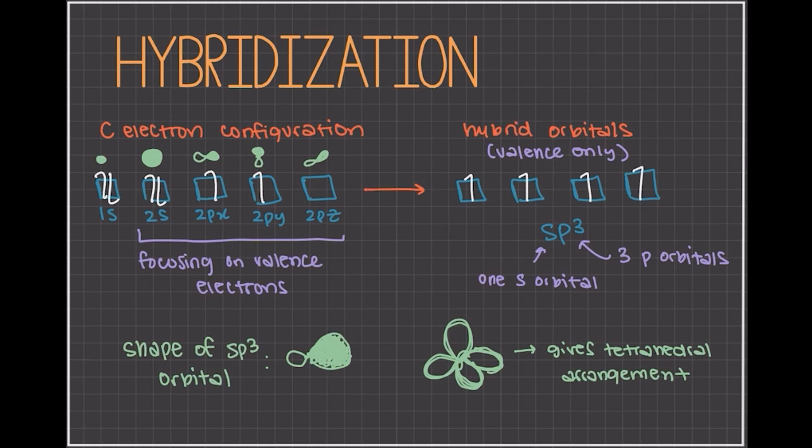Each CH bond in methane can then be described as an overlap between a half-filled 1s orbital from four hydrogen atoms, because a hydrogen atom has only a half-filled 1s orbital, and the larger lobe of one of the four sp3 orbitals from the carbon. The orbital overlap is often described using the notation sp3 from the carbon and 1s from the hydrogen. The formation of the sp3 hybrid orbitals successfully explains the tetrahedral structure of methane and the equivalency of the four CH bonds.